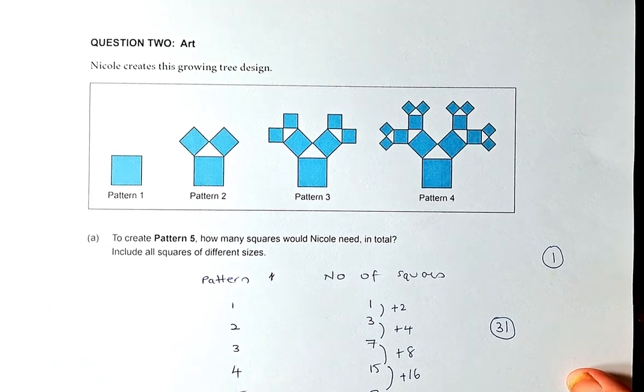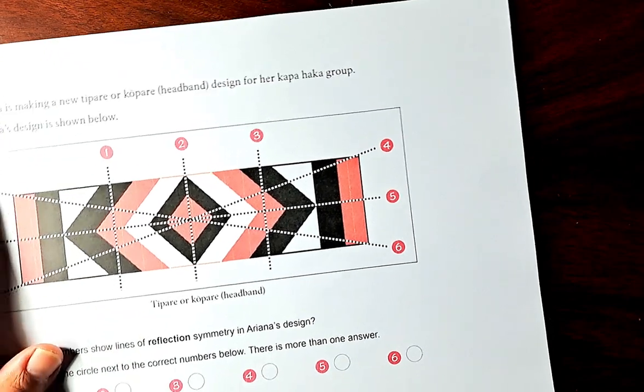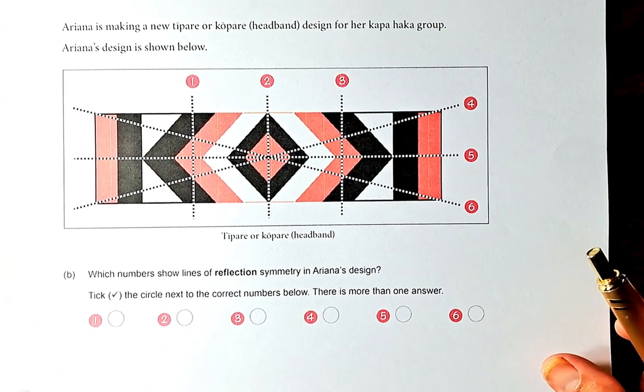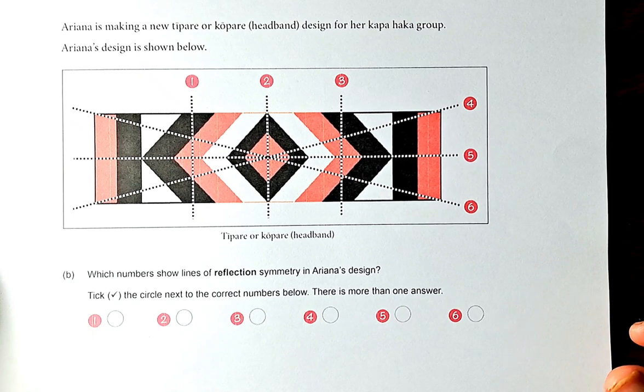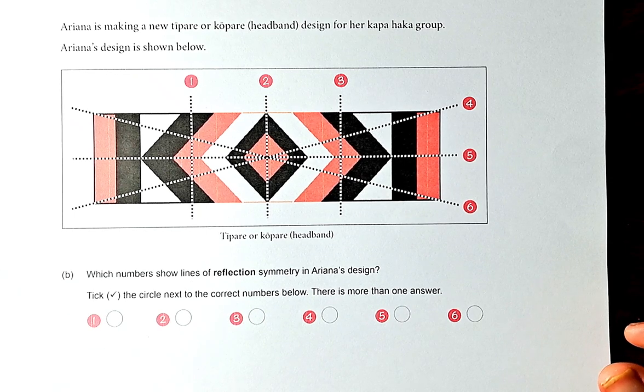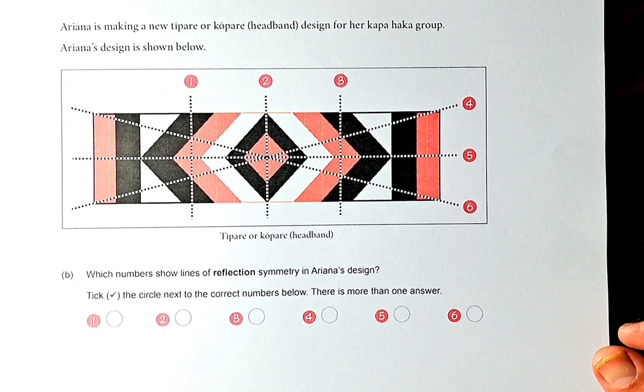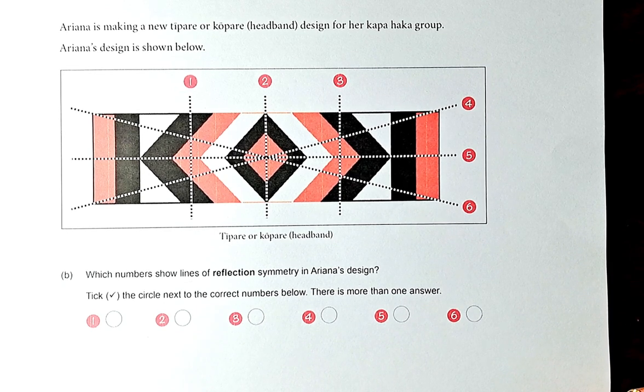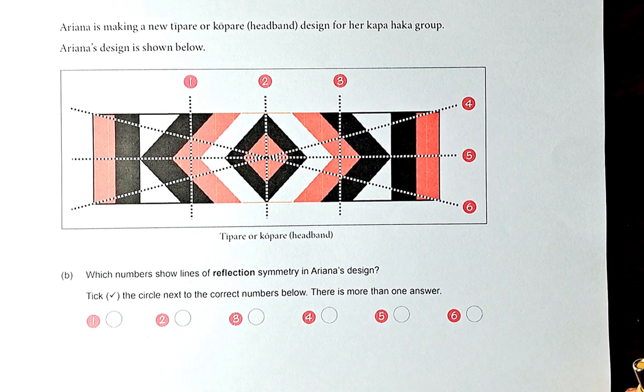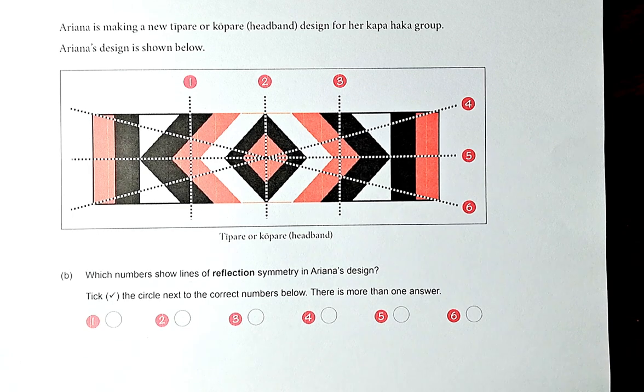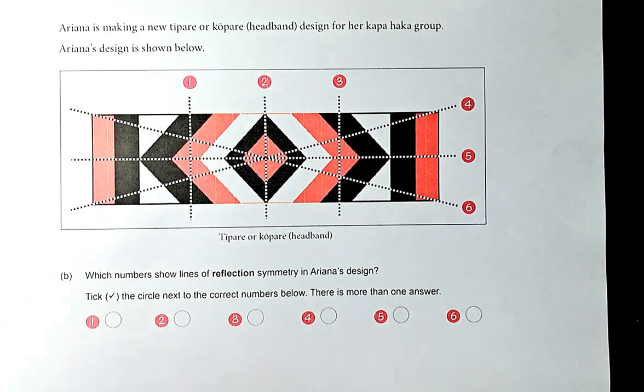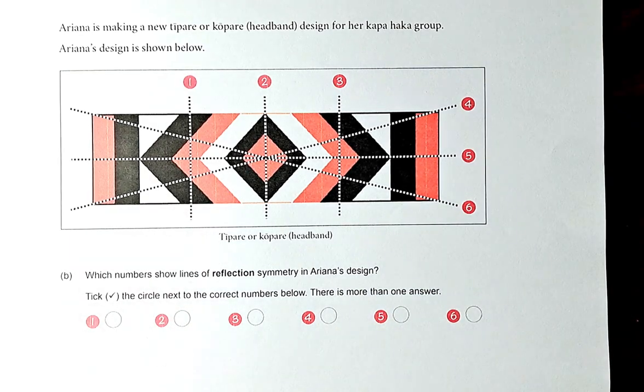Now we look at question 2B. Ariana is making a new Tipare or Kopare design for her Kapahaka group. Ariana's design is shown below. Which number shows the line of reflection symmetry in Ariana's design? So a line of symmetry is a mirror image. If you cut a line, the opposite side has to be the same shape.